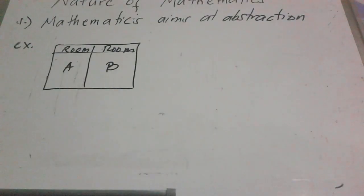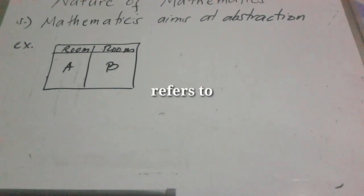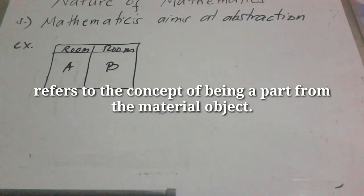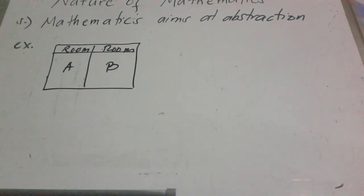The last one: the nature of mathematics is that mathematics aims at abstractions. This refers to the concept of being apart from the material object. It aspires to symbolic representations to make problems concise and comprehensible, and it aspires to develop students' observation to understand phenomena.